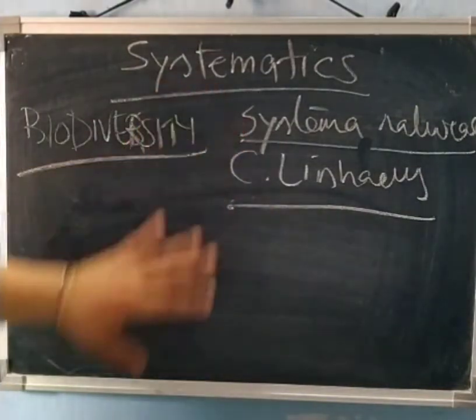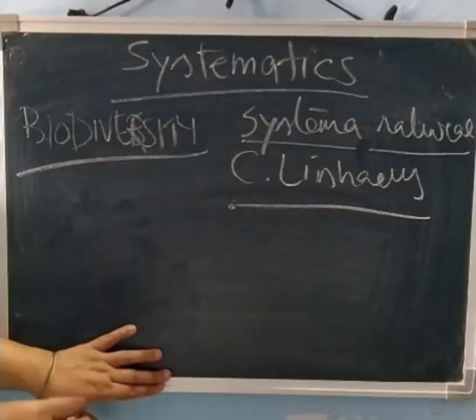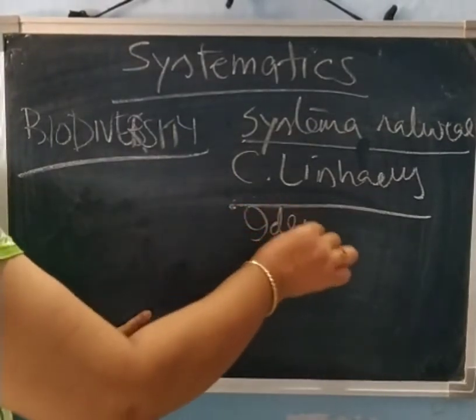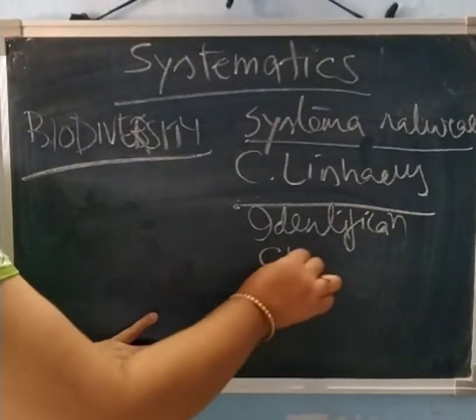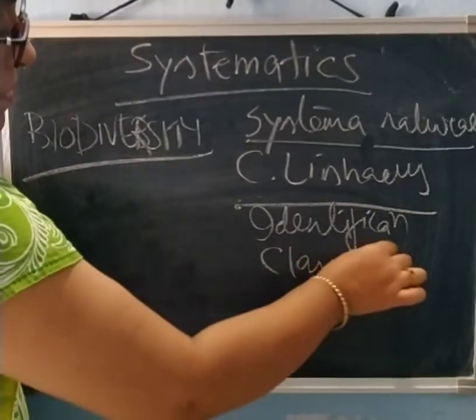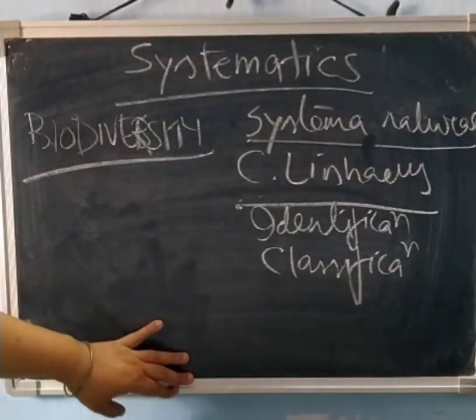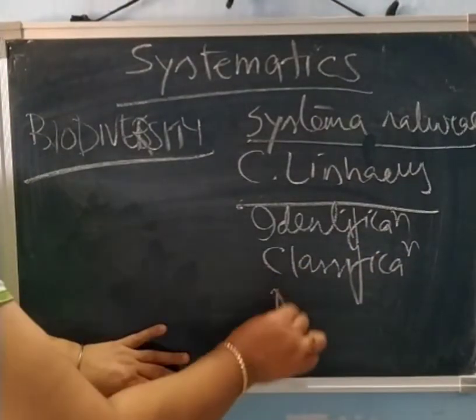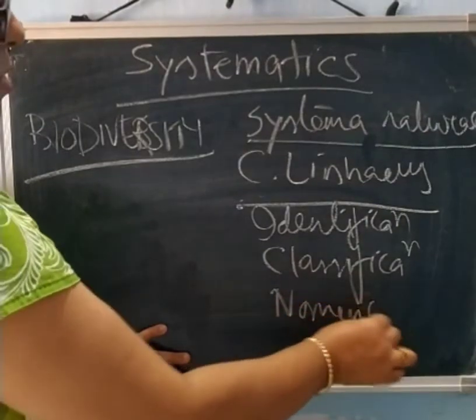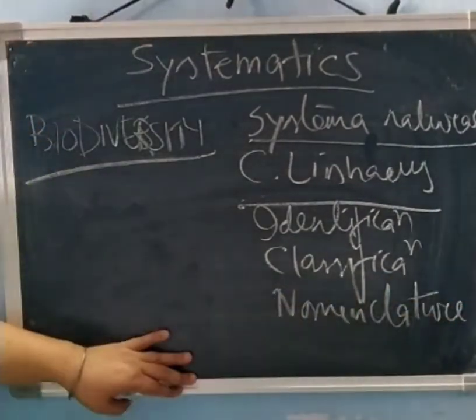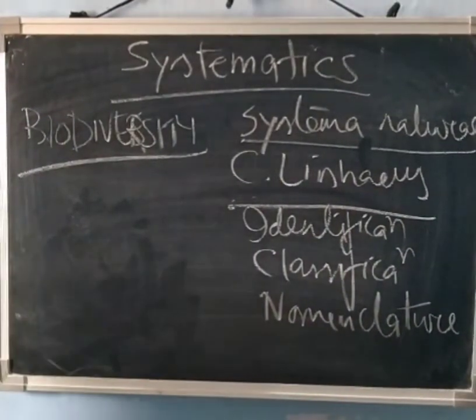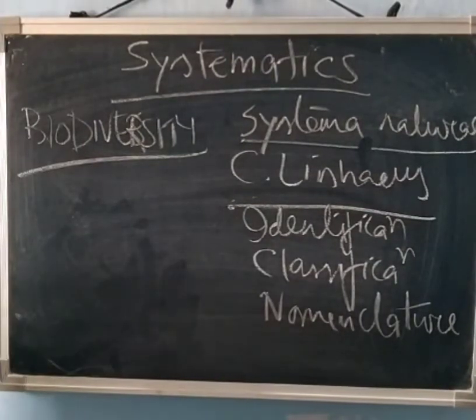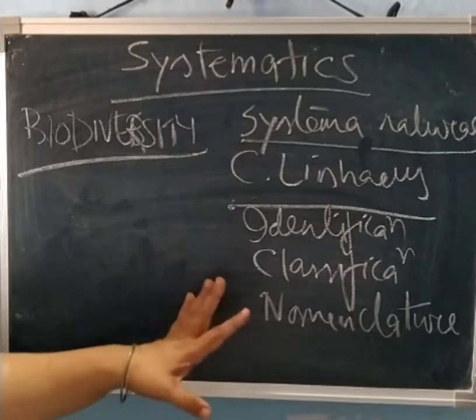So systematic includes what? What are the components of systematics? Here, it is the first identification, this is the first component. Then classification. And then classification, and after that nomenclature. So these are the components of systematics - identification, classification, and nomenclature. What is identification? It aims at finding the correct name and appropriate position of an organism. The morphological and anatomical characteristics are examined after proper identification.